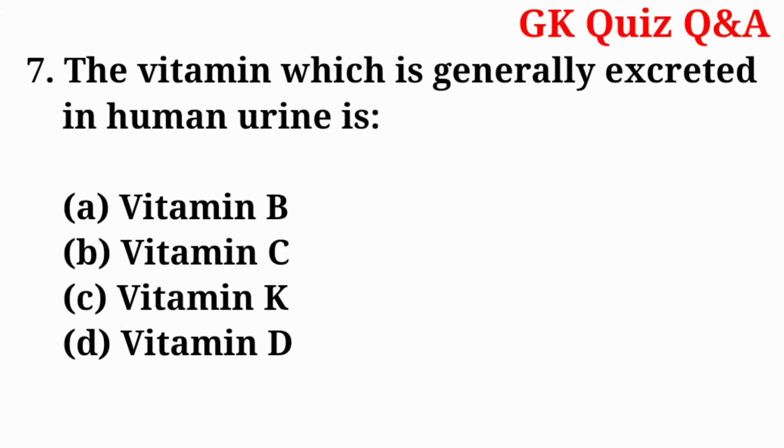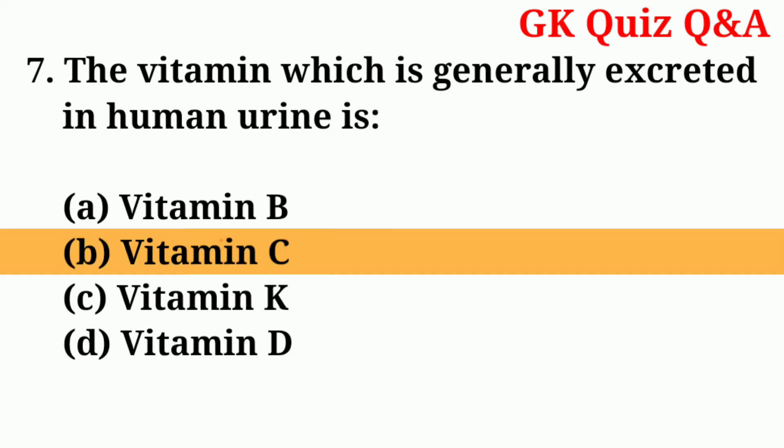Number seven: the vitamin which is generally excreted in human urine is — answer: number B — vitamin C.